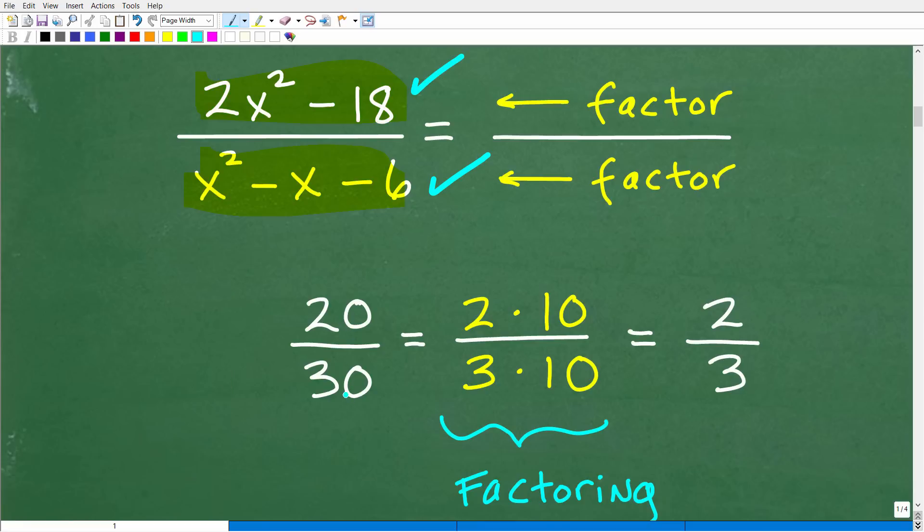Now, most of you are saying, oh, yes, that is equal to two-thirds, and you are correct. But really, technically, what you're doing is you're factoring the numerator and you're factoring the denominator. And what we're looking for is like factors. So, 20 we can write as 2 times 10, and 30 we can write as 3 times 10.